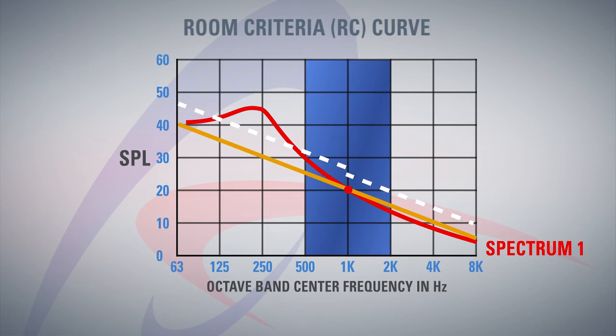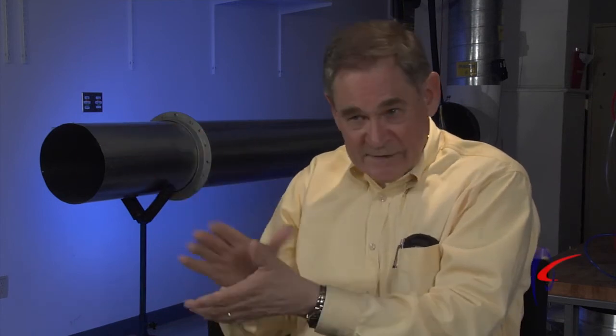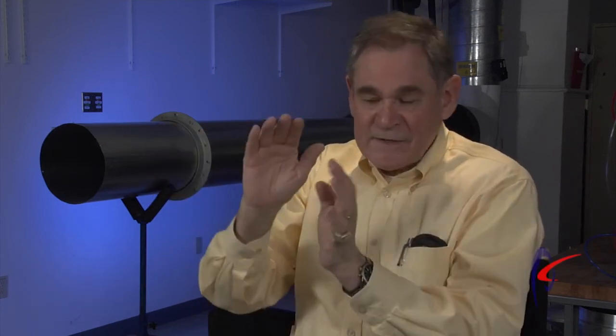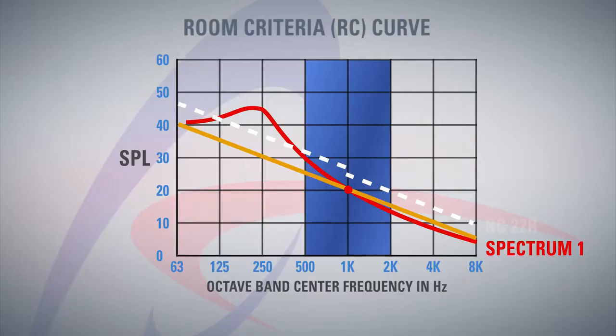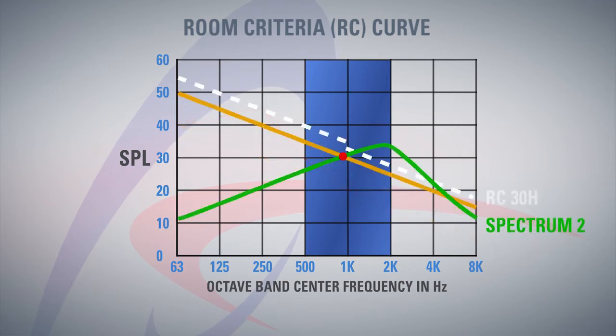Above 500 hertz, the tolerance is tightened to 3 dB, because you're looking more toward the speech interference range and want a tighter tolerance. If you don't exceed 3 dB, you don't have a hissy type system. So this gives you an RC neutral if you didn't exceed any of those tolerances. If you exceed the low tolerance it's going to be RC rumbly; if you exceed the higher tolerance, it's going to be RC hissy. It gives you an indication not only of the overall level as it affects speech communication, but also the quality of the sound.